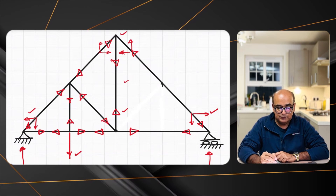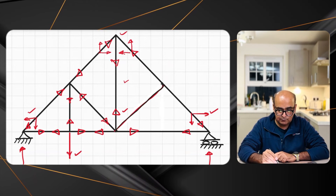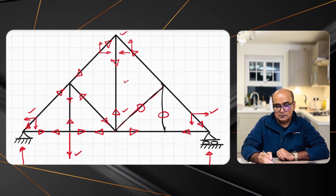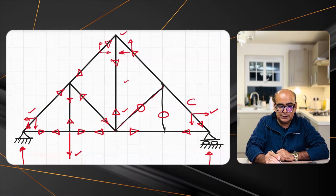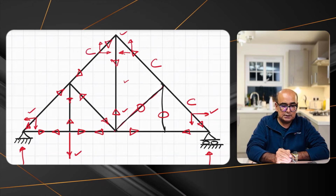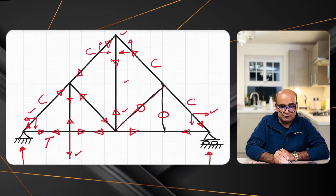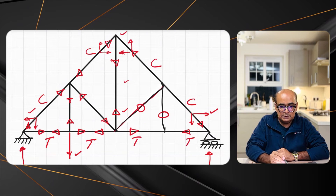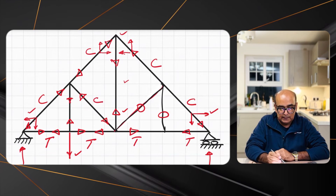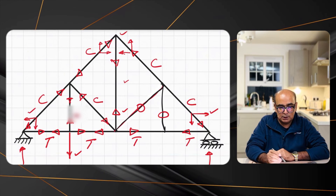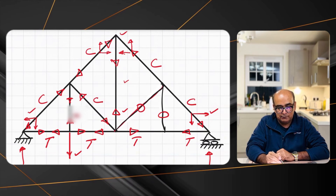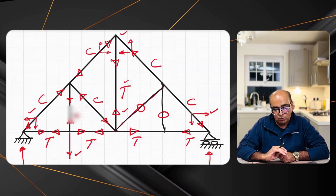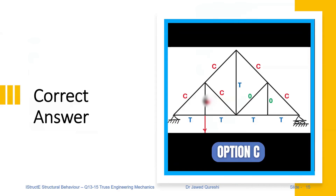Let's bring back the two zero force members we removed. These two members are zero force. The outer inclined members and top chord have compression. The bottom chord members are in tension. The two inner inclined members are in compression, and the king post is in tension. The correct answer is Option C.